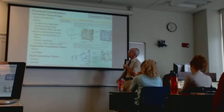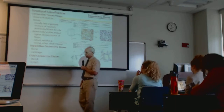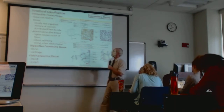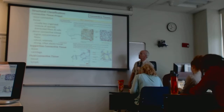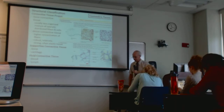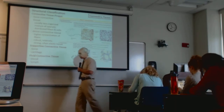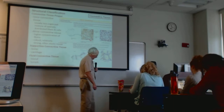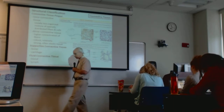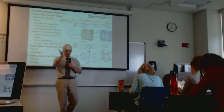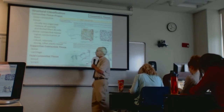Connective tissue is often described as loose or dense — those terms refer primarily to the arrangement and abundance of fibers. We also differentiate connective tissues as regular or irregular, which also refers to the fibers: if the fibers are arranged in parallel they're termed regular; if arranged at various angles to each other, that is called irregular.